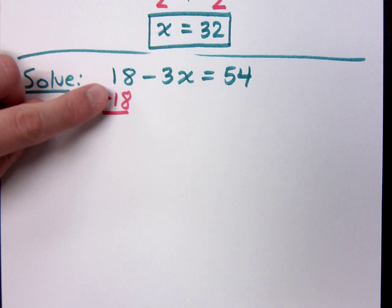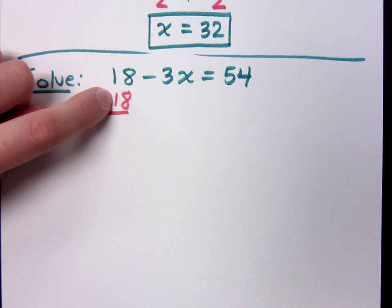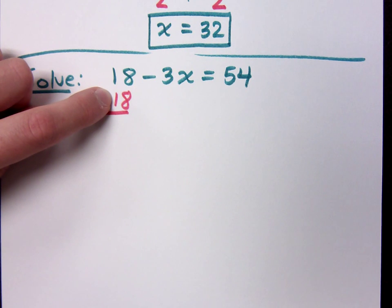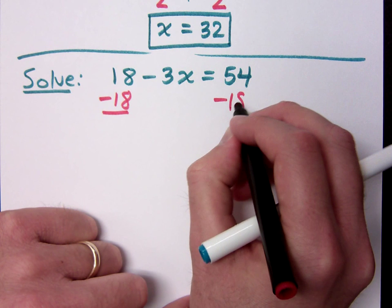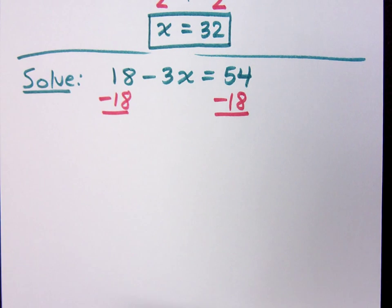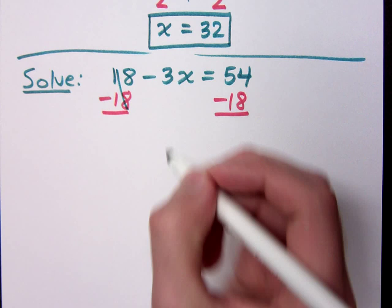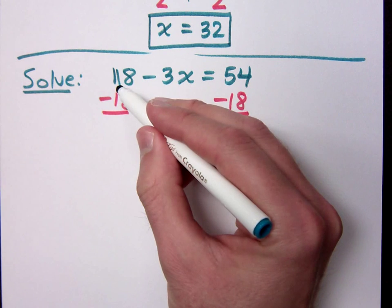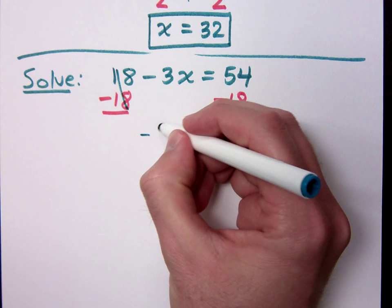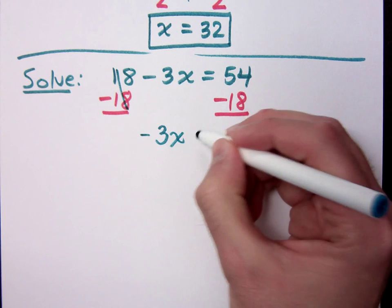Now, what if I didn't have a minus here — what if I just had 18 and put 18 underneath it? They don't cancel, right? 18 and 18 is not 0. So the 18s cancel with the subtraction. What do I have now for my equation? Negative 3x. Do I really need the negative? Yes — the negative is connected to the 3x, not the 18. So negative 3x equals 36.